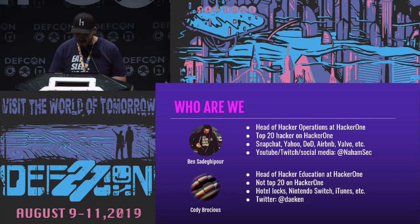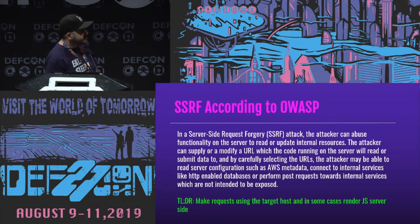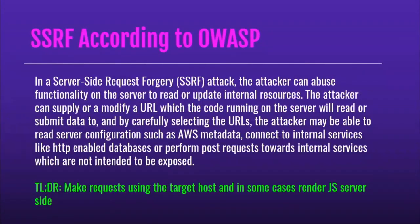I'll talk about SSRF. This is the long description on OWASP. Server-side request forgery — you abuse functionality, you can update resources, read them, tons of stuff you can do. If you're on the cloud like AWS, you can hit the cloud metadata and pull some keys.